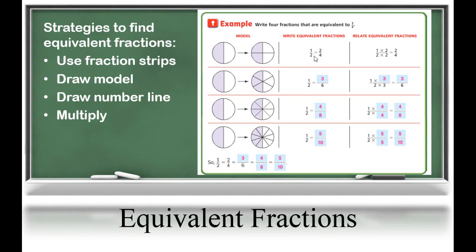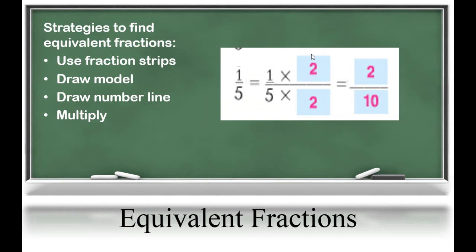Essentially, they're multiplying by one. Let's look at our example. We have one-fifth. We're going to multiply it by two-halves, or two over two — again, that's equal to one. And it results in two-tenths, which is equivalent to one-fifth.